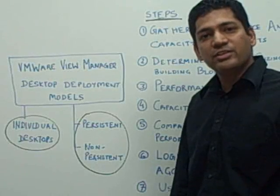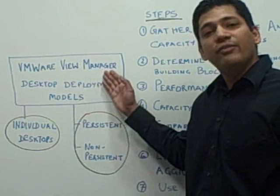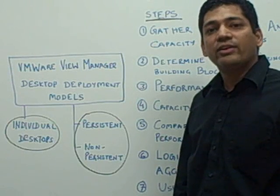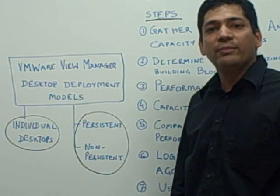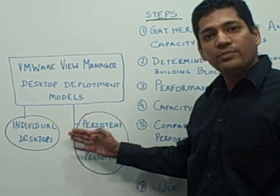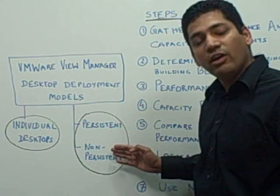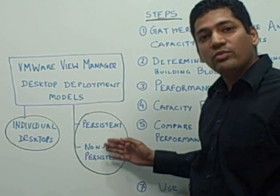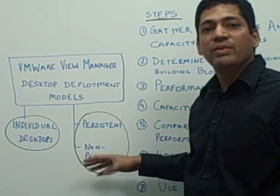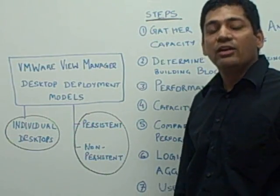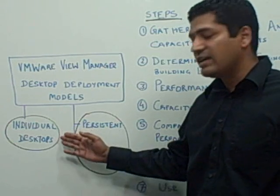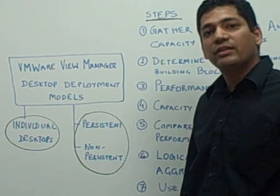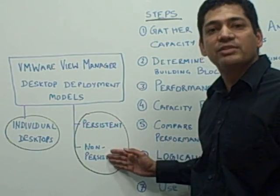If the customer is planning to implement VMware View Manager as part of the VDI management solution, they have different options for desktop deployment models: individual desktops, persistent desktops, and non-persistent desktops. A customer may choose to implement either of these or a mix based on business requirements. This session is focused around sizing for individual desktops; in a separate session I'll be covering sizing for persistent and non-persistent desktops.